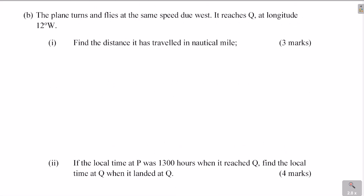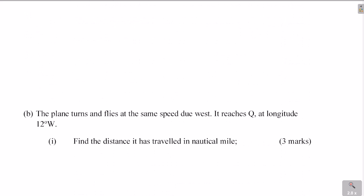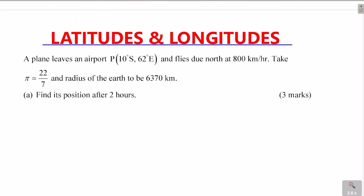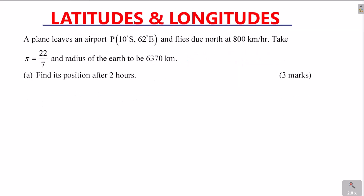Let's go to the first part of the question. A plane leaves airport P at 10 degrees south, 60 degrees east. It is always good to have a sketch of the positions of these places. This will help identify whether the place lies on the small circle, circle of latitude, or the great circle. Let me sketch.